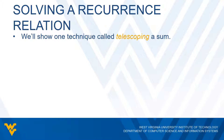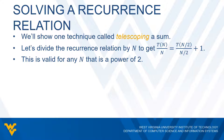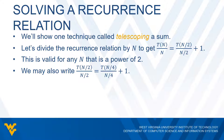Let me show you an example of how we would do this. Let's say we divide our recurrence relation by N. What we basically have is T(N)/N equals T(N/2) divided by (N/2). The plus one part comes from the plus N divided by N, which is one. So all we did is take our recurrence relation and divide by N. Now this is valid for any N that is a power of two. We can write T(N/2) divided by (N/2) as T(N/4) divided by (N/4) plus one.